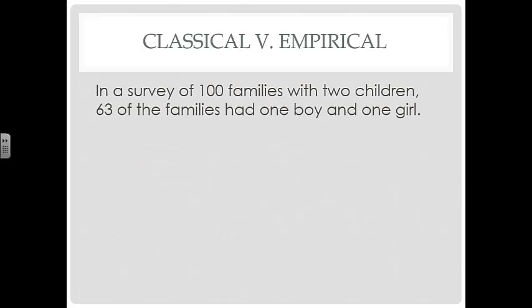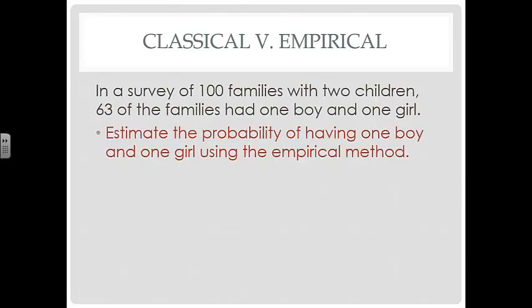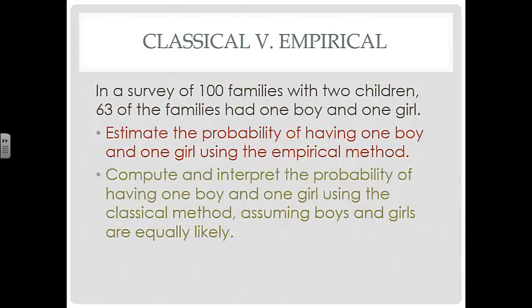In a survey of 100 families with 2 children, 63 of the families had 1 boy and 1 girl. Estimate the probability of having 1 boy and 1 girl using the empirical method. And then compute and interpret the probability of having 1 boy and 1 girl using the classical method, assuming boys and girls are equally likely.